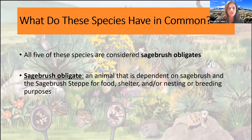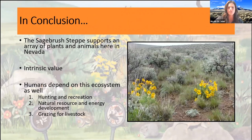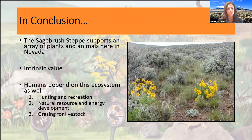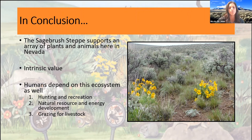In conclusion, the sagebrush steppe supports an array of plants and animals here in Nevada that has an intrinsic value — it has value in its own right for what it provides by simply being what it is. It also has value for the plants and wildlife species we just covered, as well as value for humans. We rely on it for hunting and recreational purposes, for natural resource and energy development, and we also rely on it for grazing for livestock. So not only does it provide value for wildlife species, it also provides value for recreational and economical purposes for us as well.